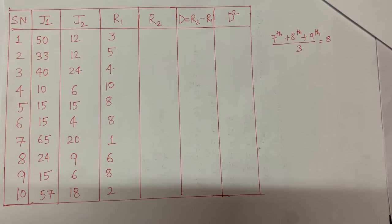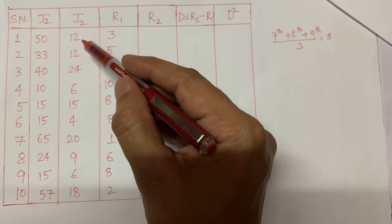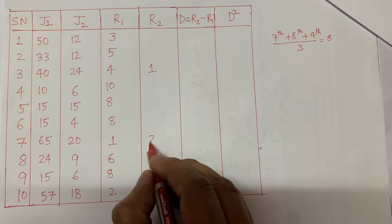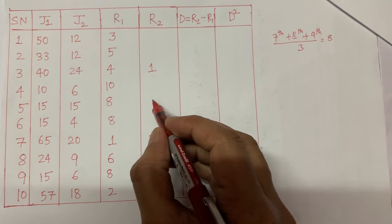Now let's allot ranks for judge two's scores. R2 represents ranks for judge two. The highest number is 24, given rank 1. The second highest is 20, given rank 2. Then 18 is given rank 3, and 15 is given rank 4.